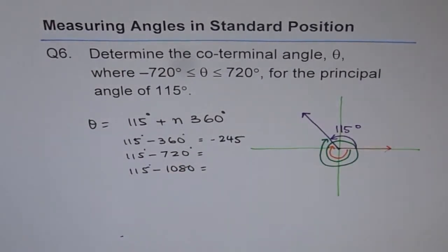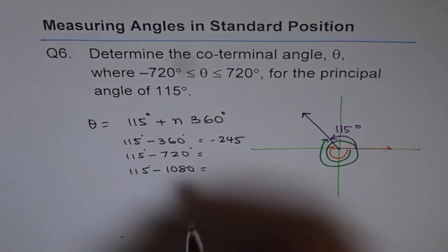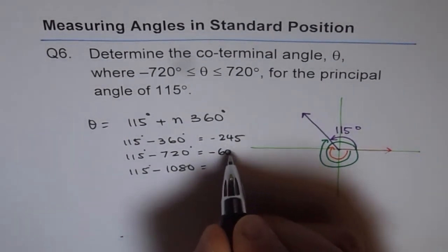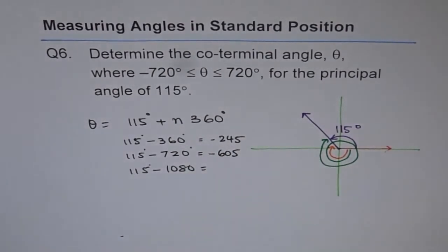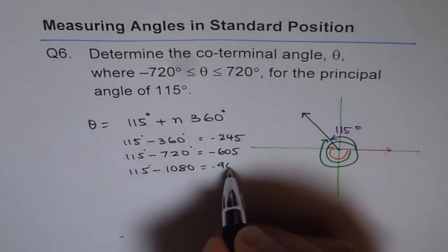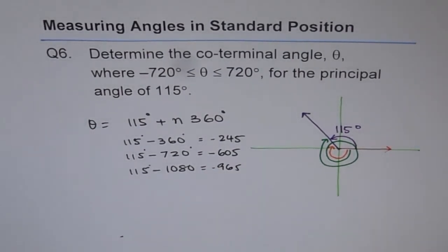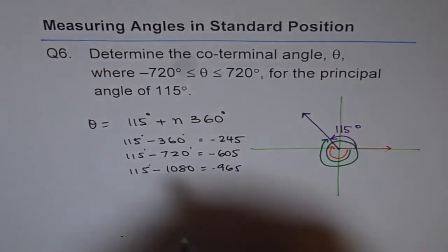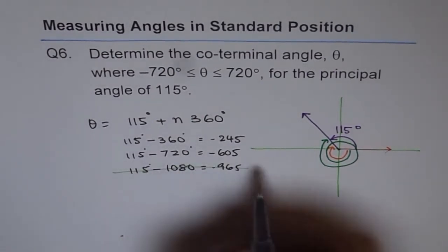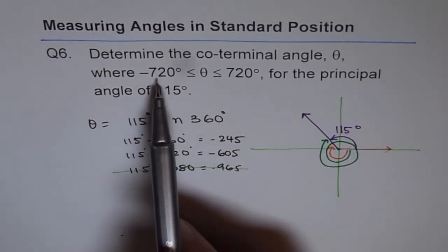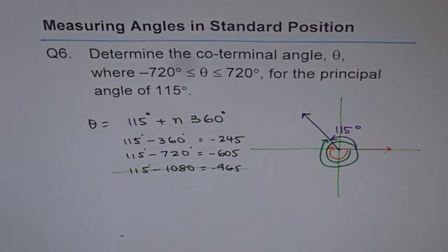So 115 minus 360 gives minus 245 — that is correct and within our domain. Taking another minus 360 gives minus 605. Taking one more minus 360 gives minus 965. Well, that is not in our domain of minus 720 to plus 720, so we will not consider that one.